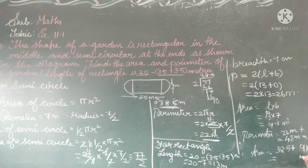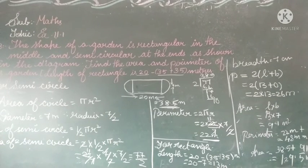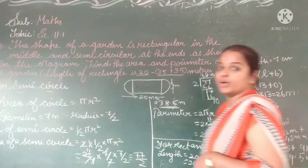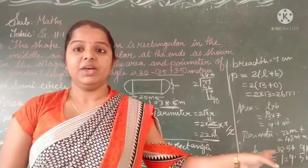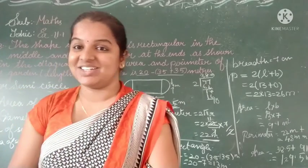So the total perimeter of the garden is 48 meters and the total area of the garden is 129.5 square meters. Hope you all understood the sum. See you next time. Stay blessed, stay healthy.